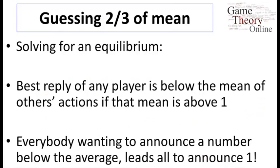Okay, so let's think about solving for an equilibrium in this game. First of all, we can begin to go through some reasoning. Given that you want to guess two-thirds of the mean, the best reply of any player—something that you can check and it's fairly easy to see—is that the best reply of any given player is going to be below the mean of the other actions, as long as people are announcing things above one. So if everyone else is announcing something above one or the mean of the other announcements is above one, then I'd like to be below that.